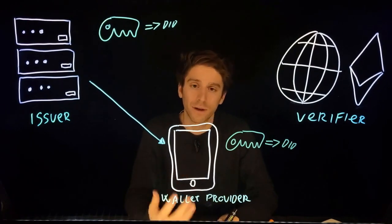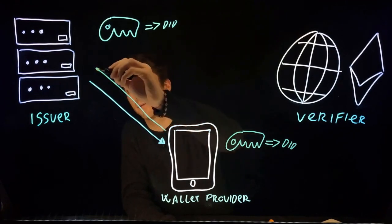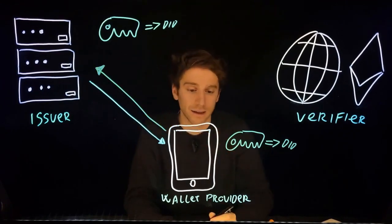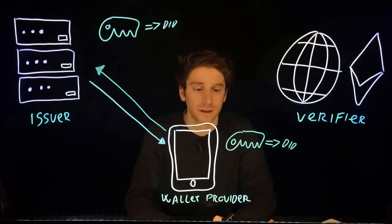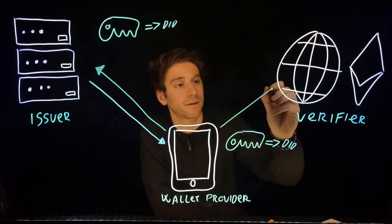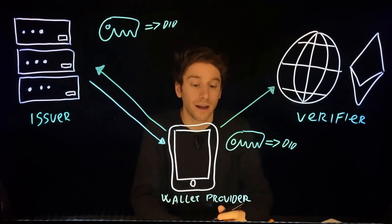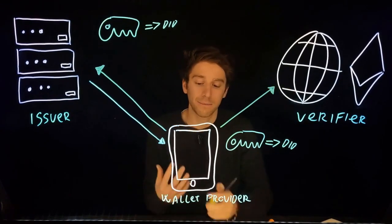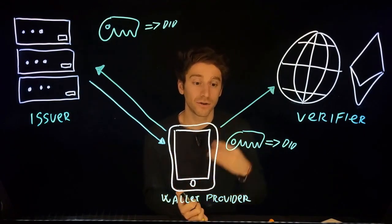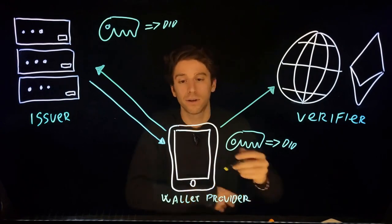Furthermore, via the Wallet SDK, the user can talk to an issuer — they can authenticate themselves to an issuer and fetch credentials from the issuer. Lastly, the wallet can speak with verifiers, and the way a wallet communicates with the verifier is by generating zero-knowledge proofs based on the credentials that are issued by the issuer and stored inside the wallet locally.